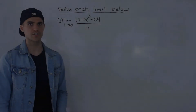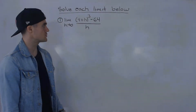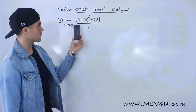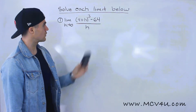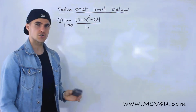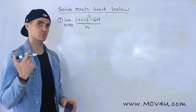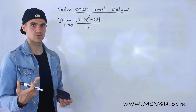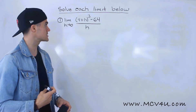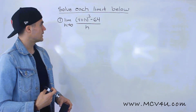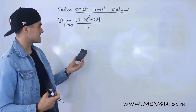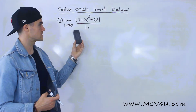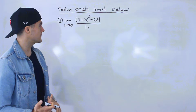What's going on, everyone? Welcome back, Patrick here. Moving on to the next limit. We have the limit as h approaches 0 of (4 plus h) to the power of 3 minus 64, all over h. Notice that we can't plug in 0 for h because then the denominator would be 0, so we have to do it another way.